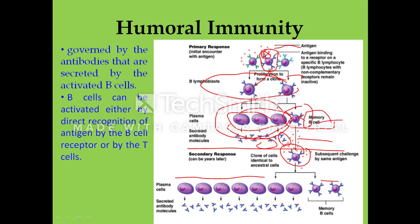This type of immunity mediated by antibodies produced by B lymphocytes is called humoral immunity — a type of acquired immunity where the body is challenged, B lymphocytes secrete antibodies to clear the infection, and memory cells retain memory for subsequent challenges. Humoral immunity is governed by antibodies secreted by activated B cells. B cells can be activated either by direct recognition of the antigen, or by T cells.